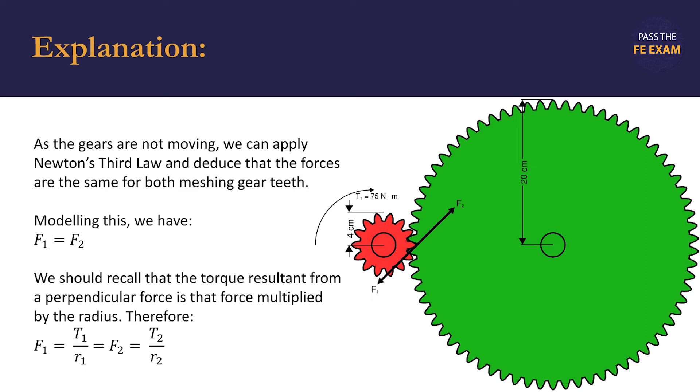This then is equal to the force F2 experienced by the larger gear. F2 is then equal to the torque transmitted to the shaft of the larger gear divided by the radius of the larger gear.